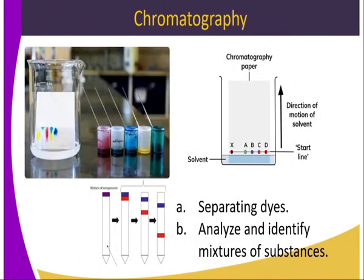We also have chromatography, which separates pigments. Chroma refers to color. Chromatography is the process by which we separate colors. Chromatologists are the people who study the process of separation of colors. We are able to separate them because they have different rates of adsorption in the adsorbent material.